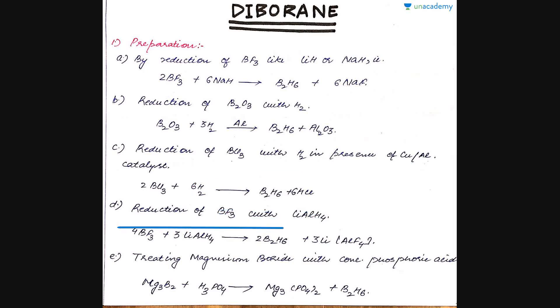Next is reduction of BF3 with lithium aluminum hydride. As lithium aluminum hydride is a very strong reducing agent, it reduces BF3 to form diborane plus lithium aluminum fluoride. Next is by treatment of metal borides with concentrated phosphoric acid. For example, Mg3B2, magnesium boride, reacts with phosphoric acid to form magnesium phosphate and diborane.